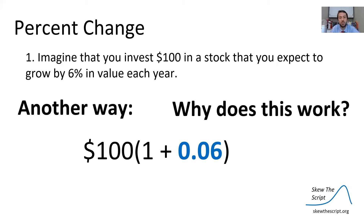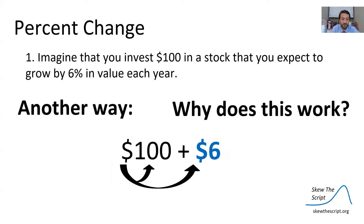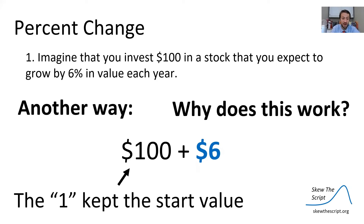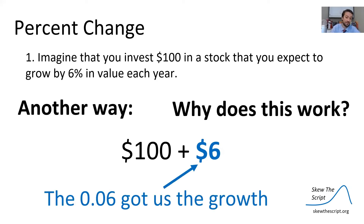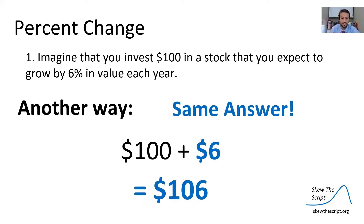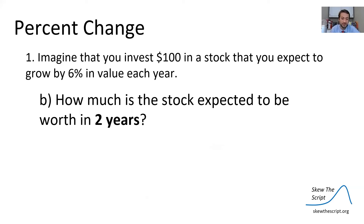Let's think about why this actually works. The $100 is distributed to the 1 and the 0.06 — it's the same as doing $100 plus $6. The 1 kept the starting value of 100, and the 0.06 got us the $6 growth. So just another way to do the same thing; we get the same answer of $106.